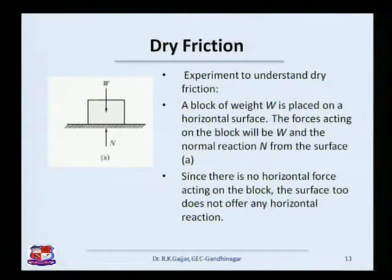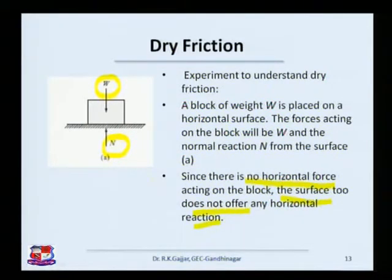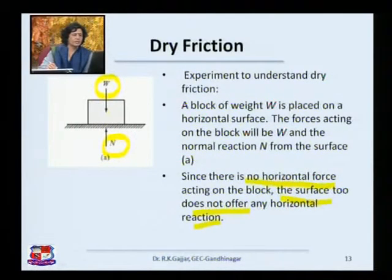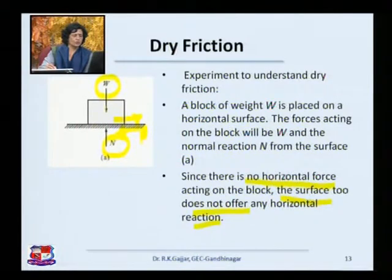Coming back to dry friction — we return to our original body. This body has its own self-weight W due to gravity, resisted by a normal force N acting exactly opposite to W. Since there is no horizontal force on this body, the surface does not need to exert any horizontal force — the body is stationary. There is no activation of friction. Friction is activated only when two surfaces try to slide over each other; whenever motion is attempted between two surfaces, friction comes into the picture.